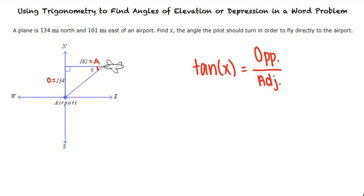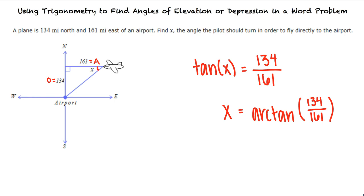That's right. From here, we can substitute in our known values and take the arc tangent of both sides to result in x equals arc tangent of 134 over 161. Using our calculator, we find that the angle x is 39.8 degrees.